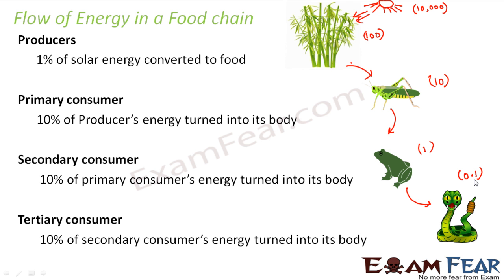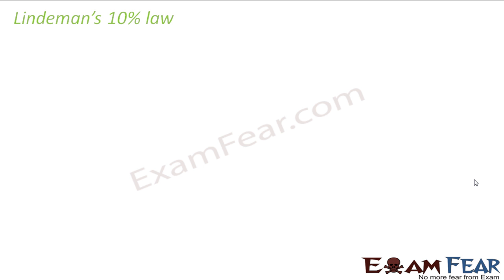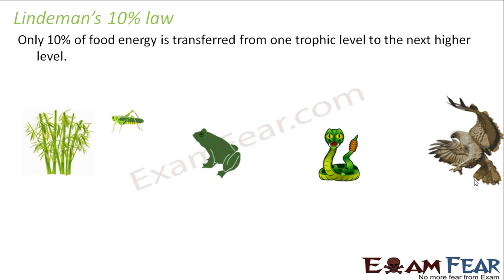It is always 10% of the previous level's energy that will actually get transferred to a trophic level. From this was derived Lindemann's 10% law. This states that only 10% of food energy is transferred from one trophic level to the next higher trophic level in a food chain.